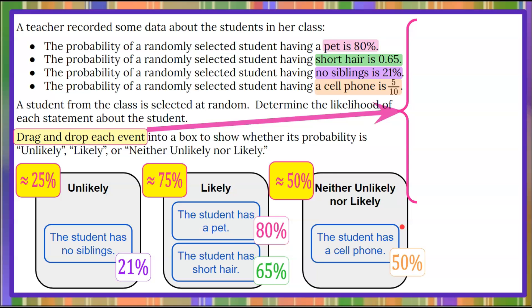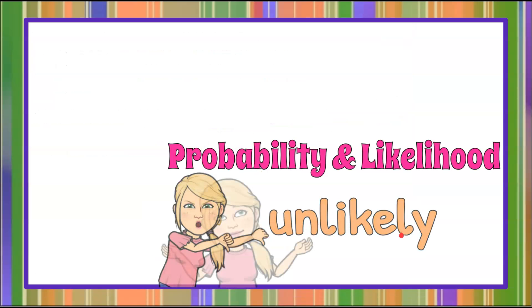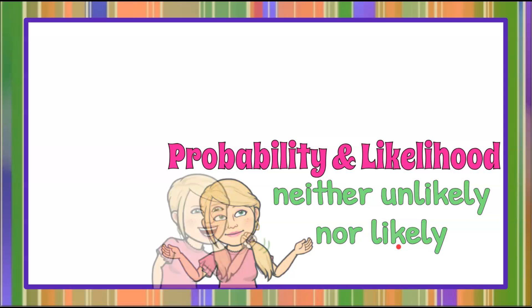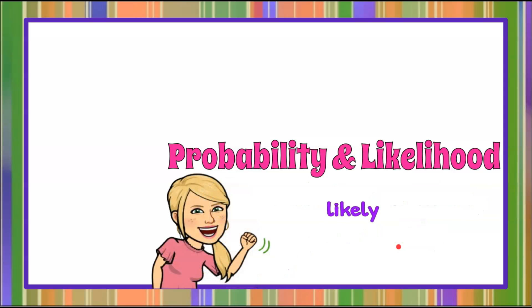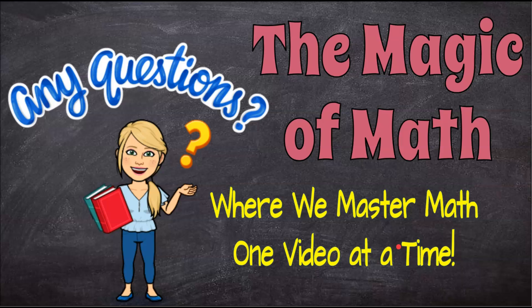So there you have it — that is how we determine probability and likelihood: likely, unlikely, and neither unlikely nor likely. That's the Magic of Math, where we master math one video at a time. Thank you for joining me today, and I hope you come back soon.